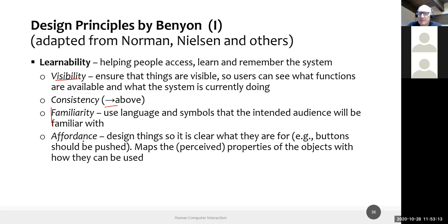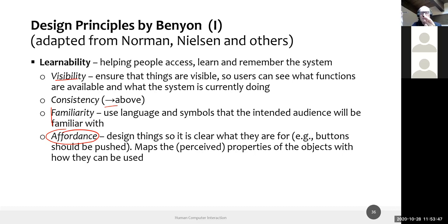An important principle applying to both physical objects and interfaces is affordance — a very powerful concept. It means the shape or size of an item, whether physical or an interface element, determines the way in which you can use it. For example, a pen cap can only be pulled and inserted in one way; its size doesn't allow any other operation.